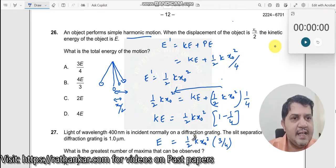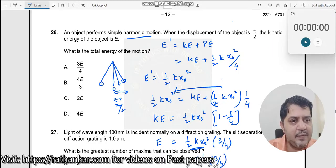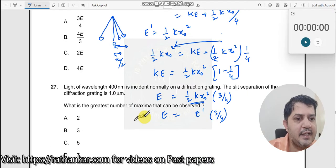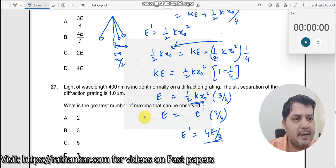So what do I need? I need the total energy E'. So I can write E' times 3/4 equals E. Therefore, E' equals 4E divided by 3.